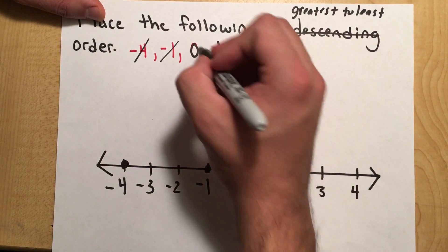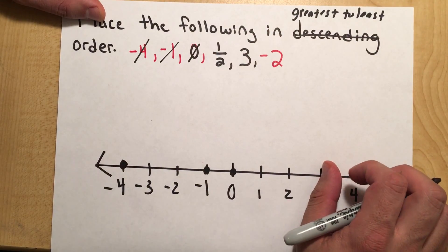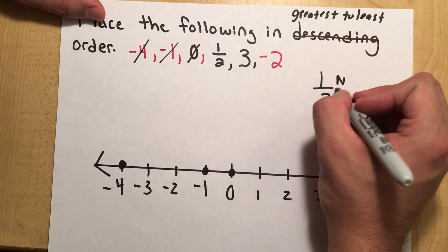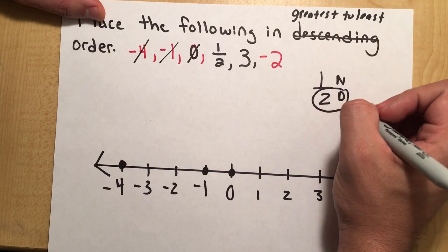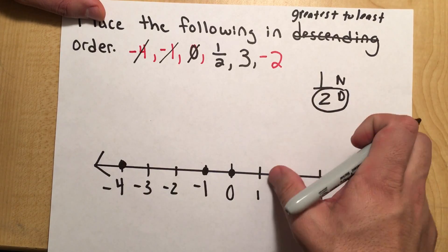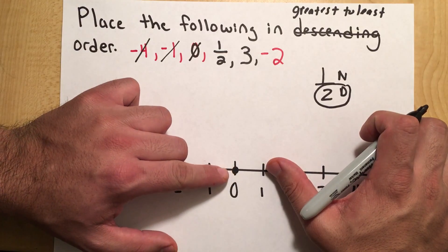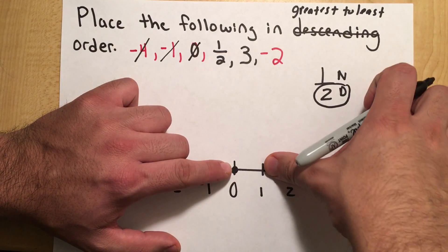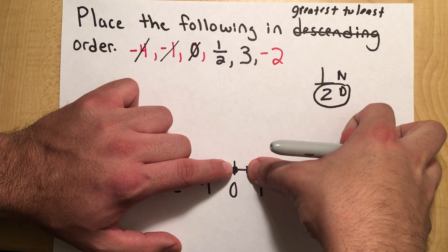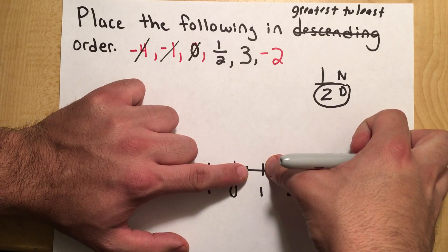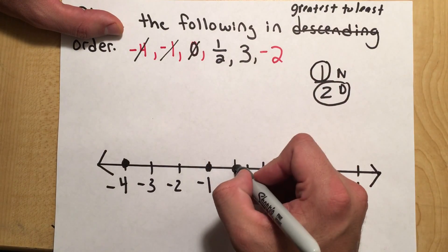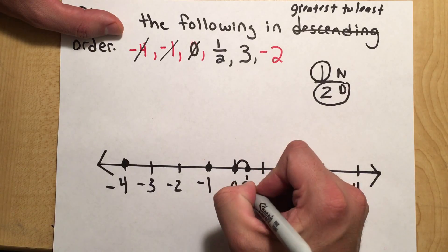And then after 0, we have 1 half. So from the last video, let's use your strategy. Our denominator tells us how many equal parts we're going to have to divide our whole into. So the number 1 half would be between 0 and 1, and that tells us that we're going to have to divide our whole into two equal parts. So I'm just going to put a line here. There's two spaces in between the whole number, and the numerator tells us how many skips we're going to make. So 1 half would actually be right here.